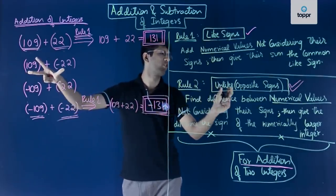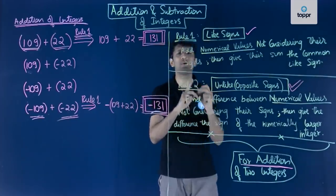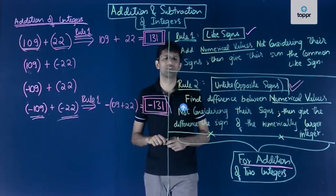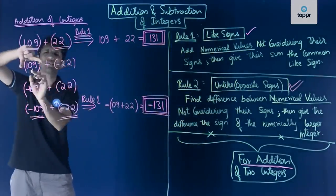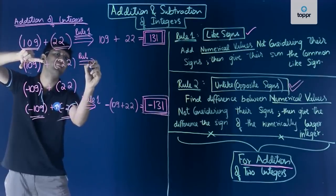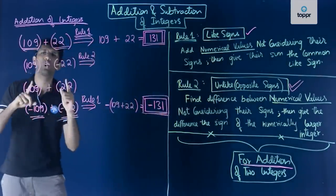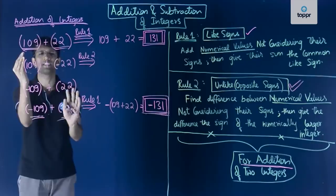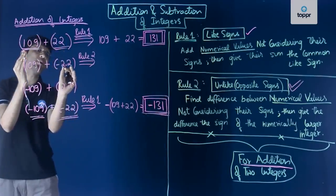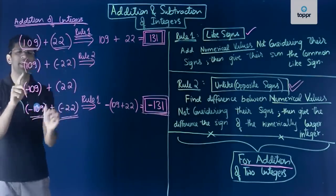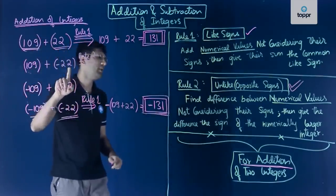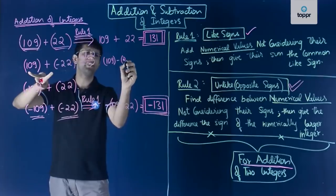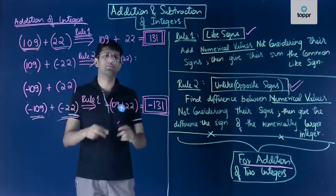Rule two is for unlike or opposite signs. It says that whenever we add two integers with unlike signs, we find the difference between their numerical values not considering the signs. For the case of 109 + (−22): the numerical value of 109 is 109 and the numerical value of −22 is 22. We find the difference: 109 − 22 = 87.